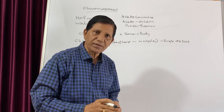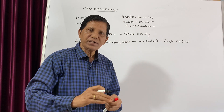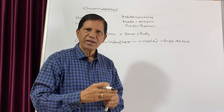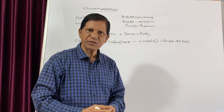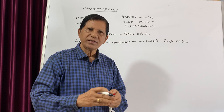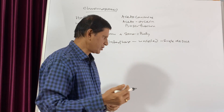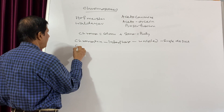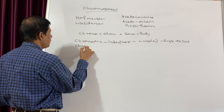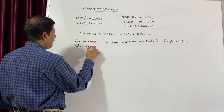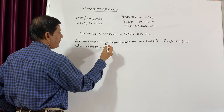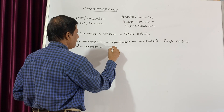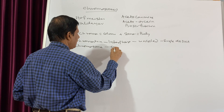But when the cell enters into cell division, the DNA duplicates. At that time, it is known as a chromosome — it is known as a chromosome during cell division.